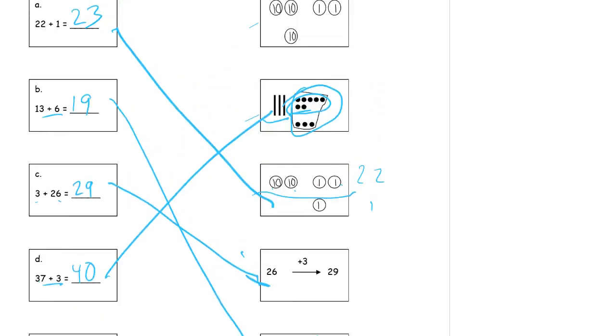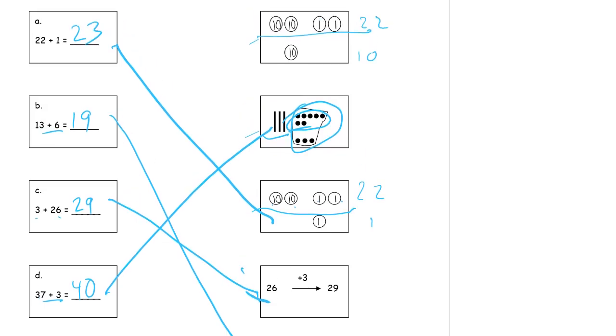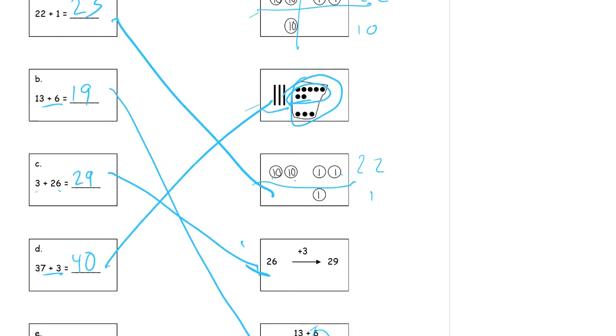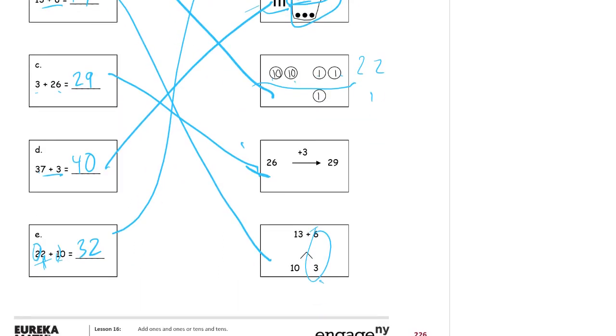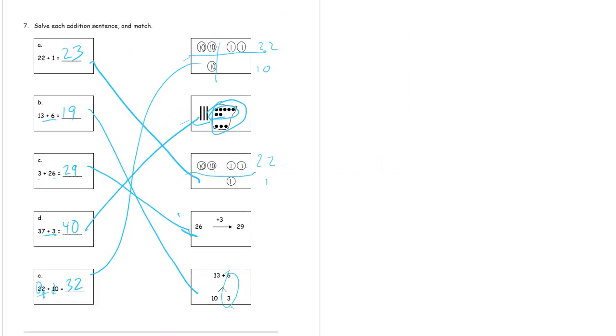And that means that this 22 plus 10. Here's the 22. There's the 10. And they're keeping the 10s and the 1s left and right. Match those up. And zoom out so you can see the whole thing.